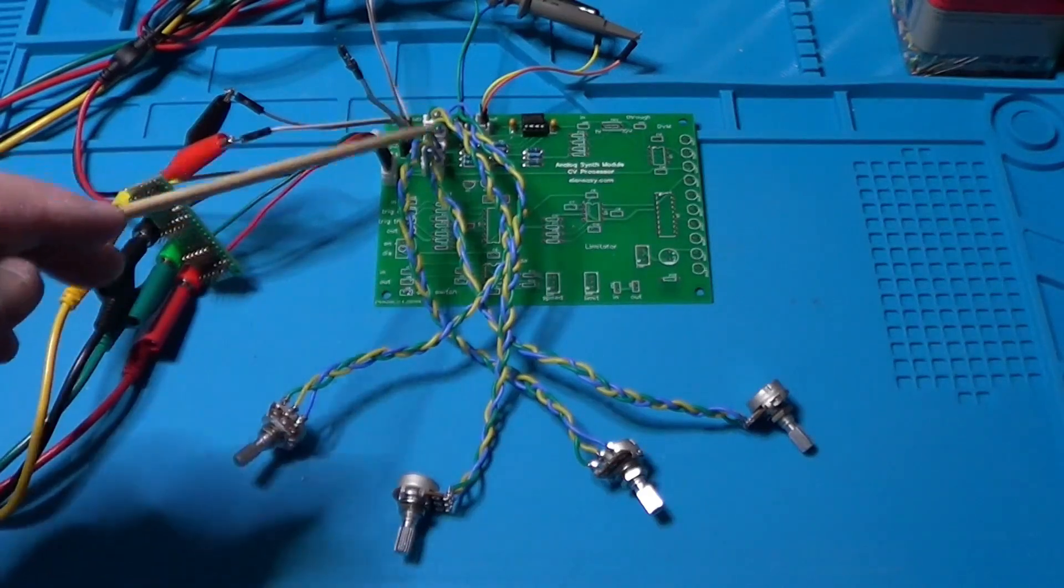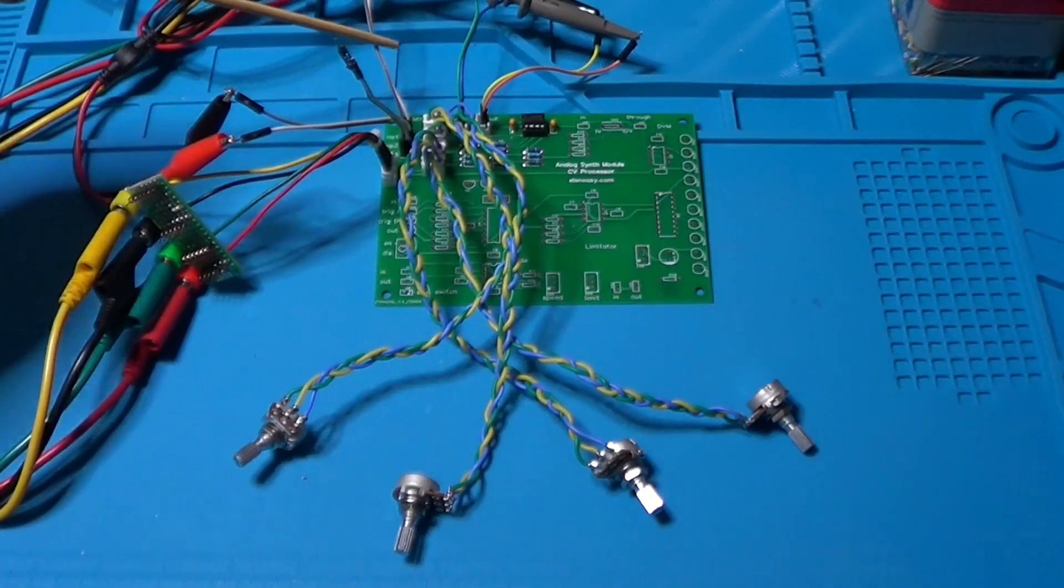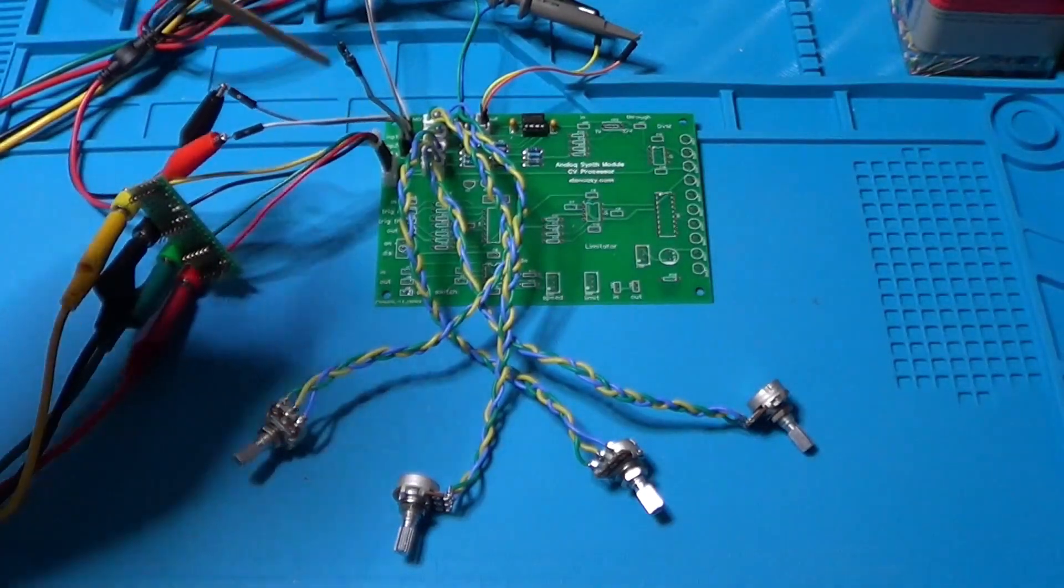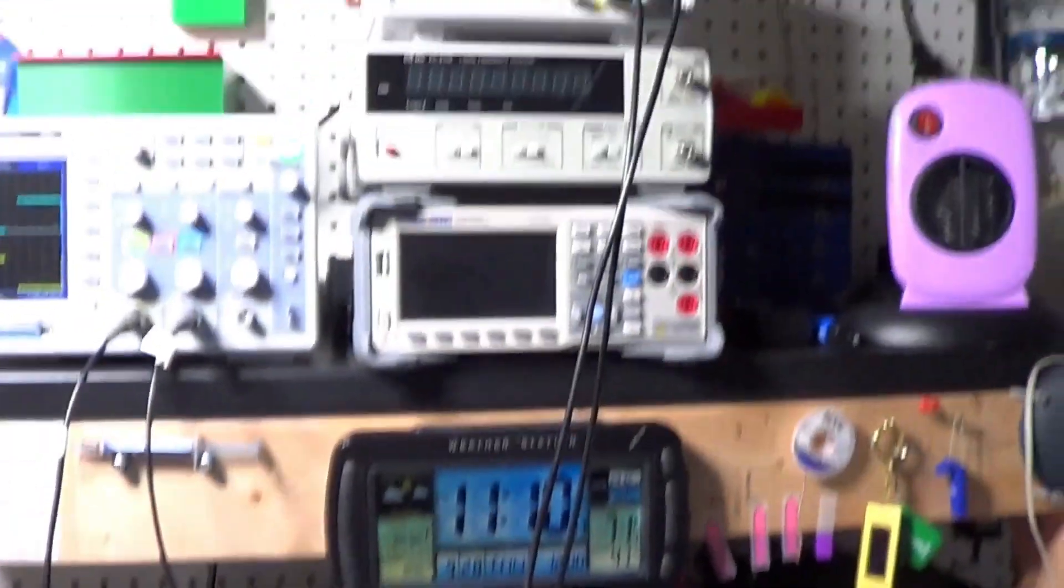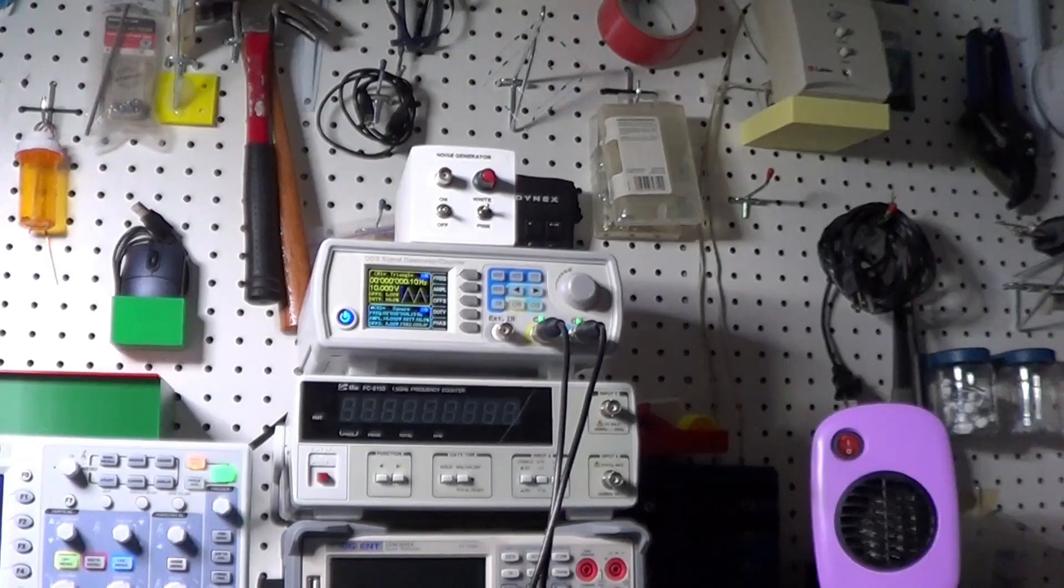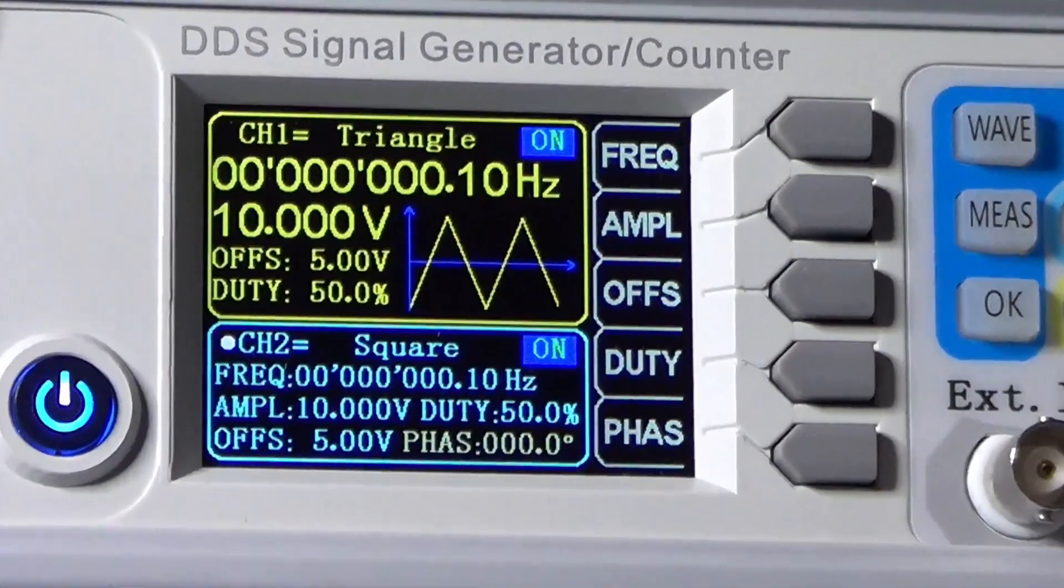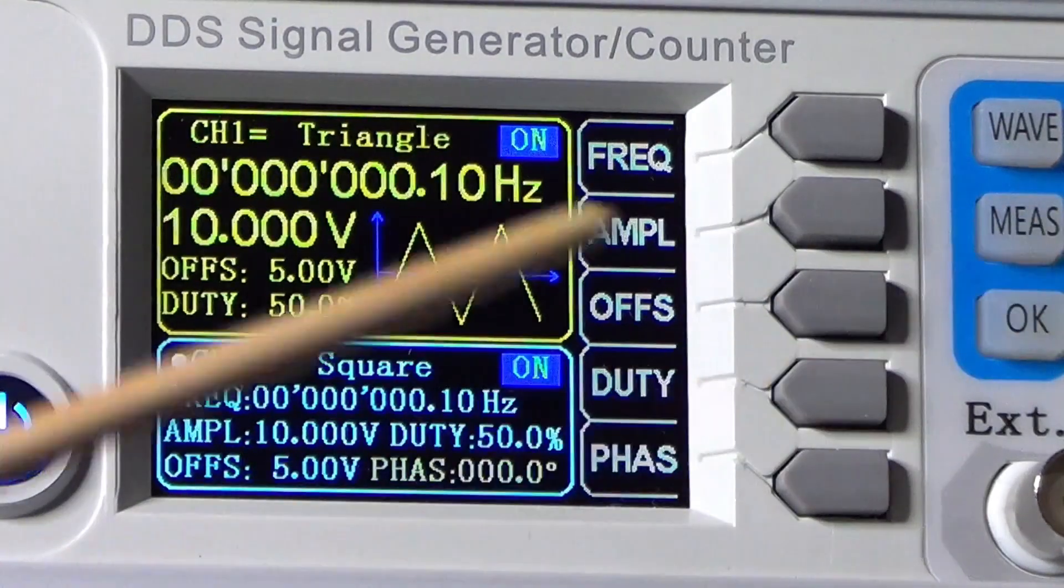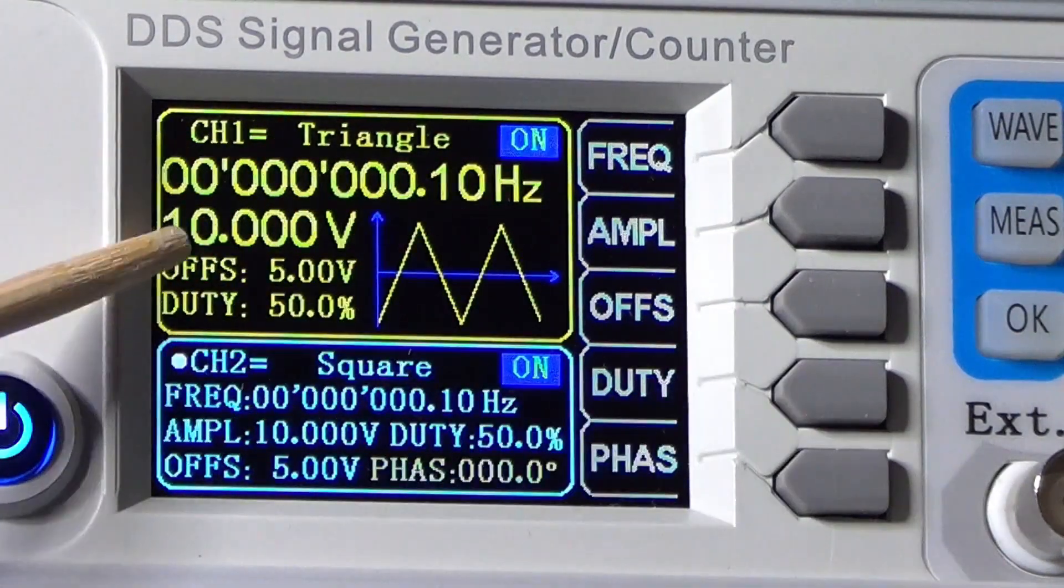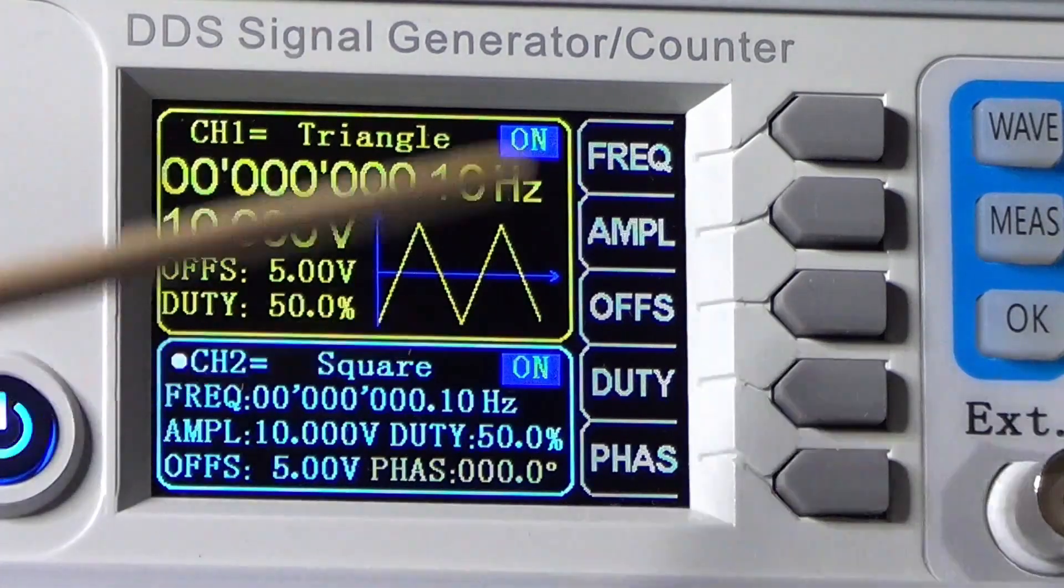Time now to test the circuit we mounted on the PCB, the DC mixer. I have already connected four potentiometers, and I have also connected the first and second inputs of the mixer to the two outputs of my function generator. The instrument is set to provide on its first channel a signal with a frequency of 0.1 Hz in the form of a triangular wave 10V peak-to-peak, going from 0 to 10V and vice versa. The second channel instead provides a square signal at the same frequency of 0.1 Hz and the same amplitude going from 0 to 10V.